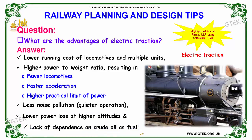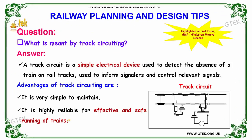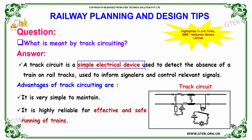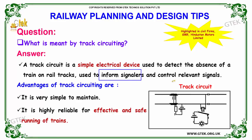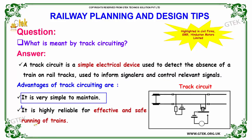The next question: what is meant by track circuiting? A track circuit is a simple electrical device used to detect the absence of a train on rail tracks, used to inform signalers and control relevant signals. Some advantages of track circuiting are that it is very simple to maintain, highly reliable, and effective for safe running of trains.